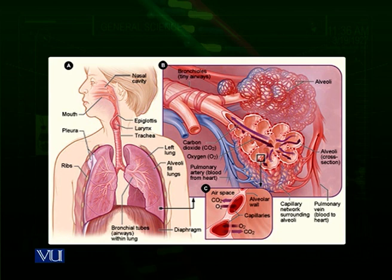Lungs are also protected by another structure called the pleural cavity. Lungs are present inside a membranous structure — we call this the pleural cavity. The membrane covering this pleural cavity is called the pleura. The area between the lung and the pleural cavity is filled with fluid so that when lungs expand and contract during inhalation and exhalation, there is no resistance. This pleural cavity helps the lungs reduce resistance while expanding and collapsing.